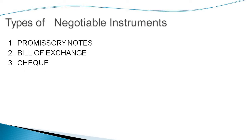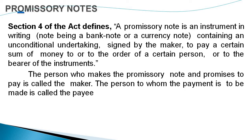There are different kinds of negotiable instruments: promissory notes, bills of exchange, and cheque. According to statute — that is, according to the law — we will mainly be concentrating on three kinds of negotiable instruments in this chapter: promissory note, bills of exchange, and cheque. Let me give the definition of promissory note.